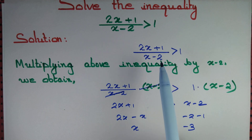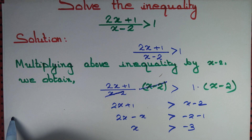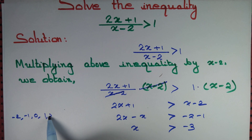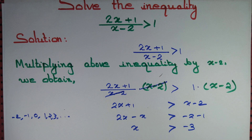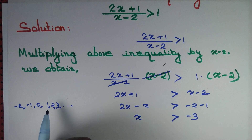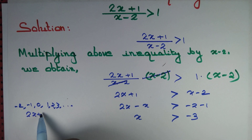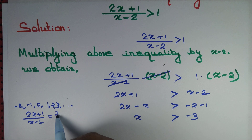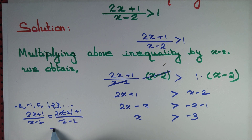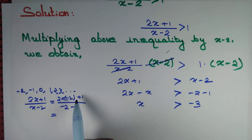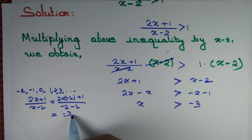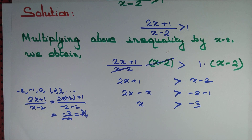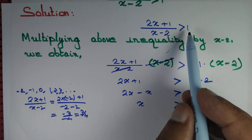However, let's test a number greater than minus 3 — try x equal to minus 2. Then 2x plus 1 by x minus 2 equals 2 times minus 2 plus 1 by minus 2 minus 2, which is minus 3 by minus 4, that is 3 by 4, which equals 0.75. But 0.75 is not greater than 1.